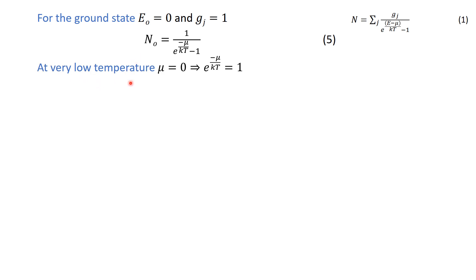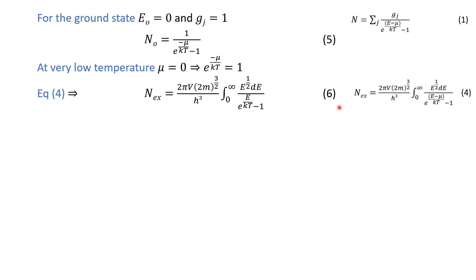At very low temperature, the chemical potential mu is equal to zero, because the energy is quite low and adding or removing a particle from the system has no effect on the overall energy. Therefore, the exponential term e^(mu/kT) equals one. Substituting this into equation number 4, we obtain the expression for the number of excited particles given by equation number 6.